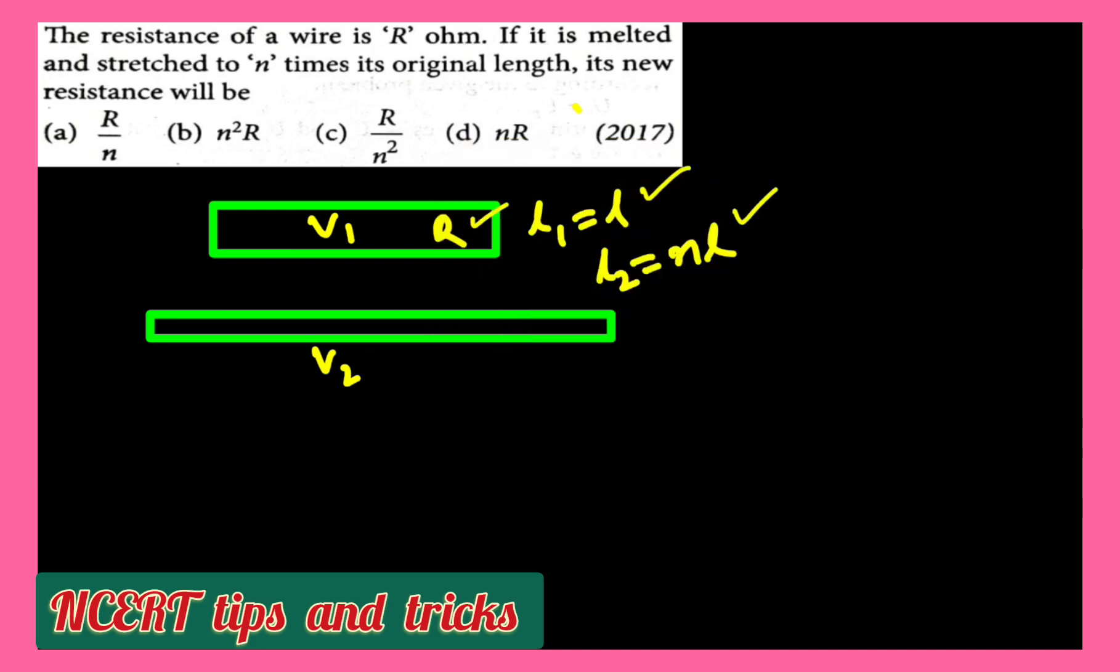One thing is common here that volume remains the same in both cases. That means V1 equals V2, and volume equals area into length.